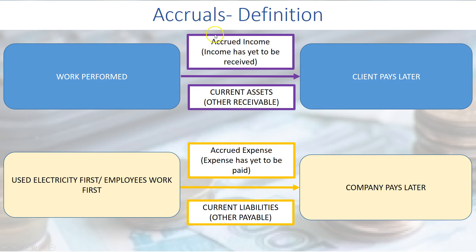Accruals can be applied to income as well as expense. When accrual is applied to income, the term is accrued income. In layman's terms, it means income has yet to be received. When we look at accrued expense, it is the accounting term you need to know — from a layman's perspective, it means expense has yet to be paid.